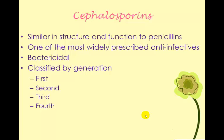Cephalosporins are classified according to generation — first generation are the older ones, up through fourth generation. Changes have been made to the chemical structure at each generation so that they are effective against bacteria that became resistant to earlier generations. That's the main reason for the different generations. They are bactericidal, meaning they kill rather than just slow down the pathogen.